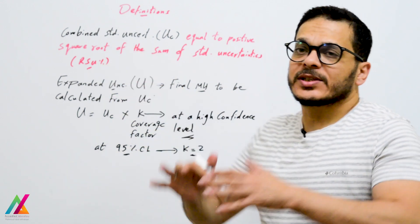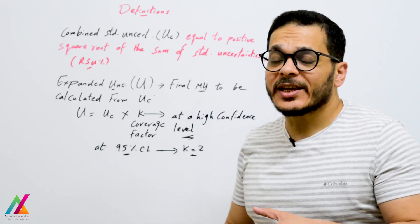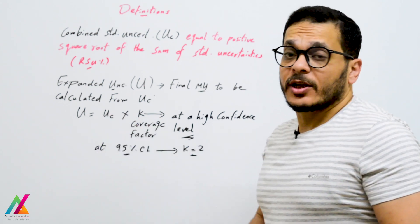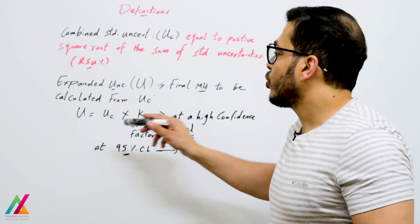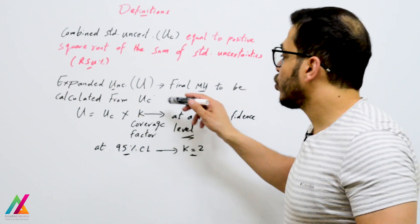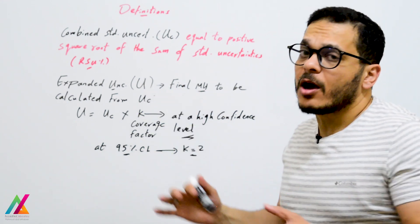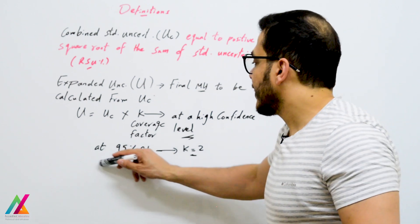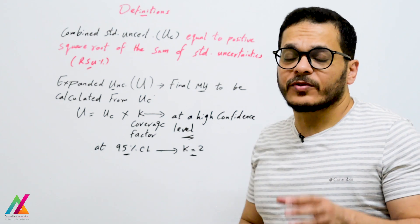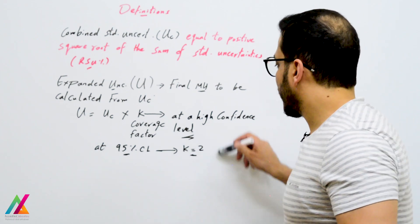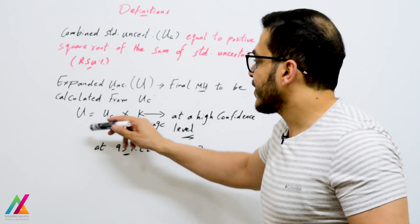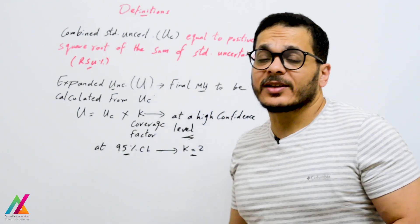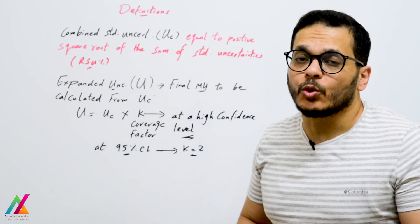Expanded uncertainty is the overall uncertainty calculated from the combined uncertainty. Expanded uncertainty equals the coverage factor multiplied by the combined uncertainty. At the 95% confidence level, the coverage factor equals 2, so expanded uncertainty equals combined uncertainty multiplied by 2.